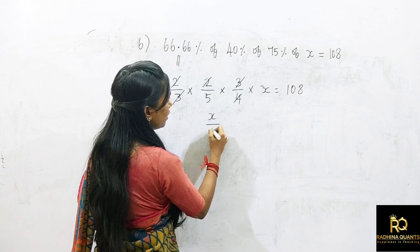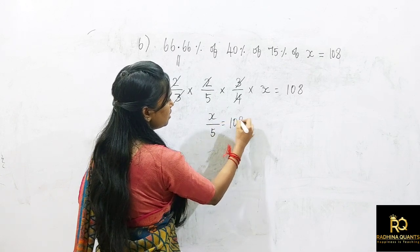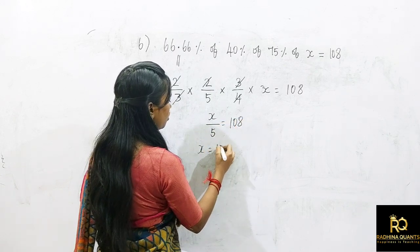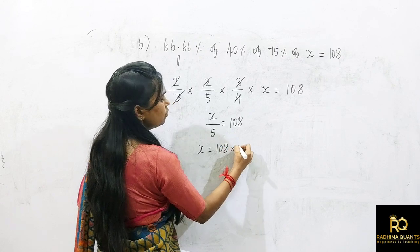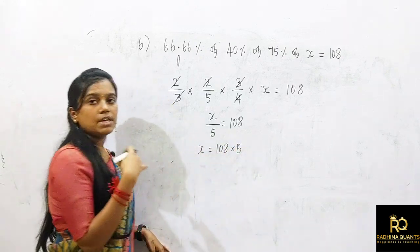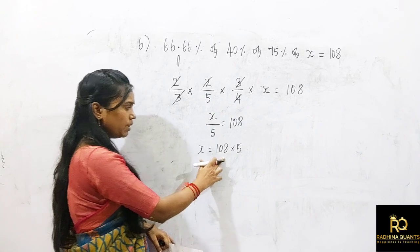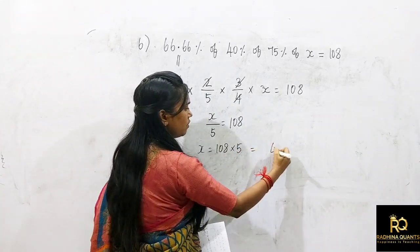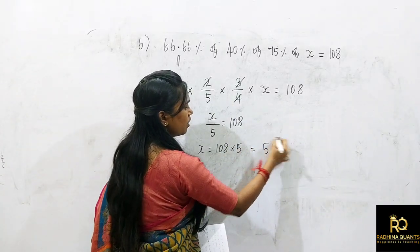So x divided by 5 equals 108, therefore x equals 108 × 5. We multiply by 10 and divide by 2: 108 × 10 = 1080, divided by 2 = 540. So x equals 540.